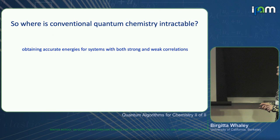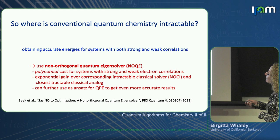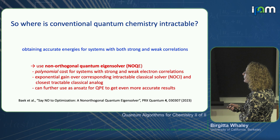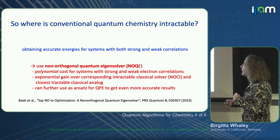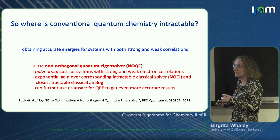Quantum chemistry has problems obtaining accurate energies for systems with both strong and weak correlations. There is an approach that allows polynomial cost for systems with strong and weak electron correlations — quantumly polynomial — and in addition, there's an exponential gain over the corresponding classical solver. In fact, the corresponding classical solver is impossible to scale, and the closest classical analog is also exponentially more expensive.